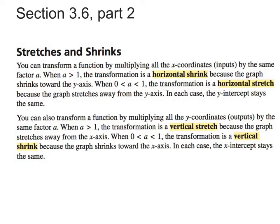You can transform a function by multiplying all of the x-coordinates by the same factor of a. We have two options: a could be greater than 1, or it could be between 0 and 1. If it's greater than 1, the transformation is a horizontal shrink, because the graph shrinks towards the y-axis. When it's between 0 and 1, the transformation is a horizontal stretch, because the graph stretches away from the y-axis.